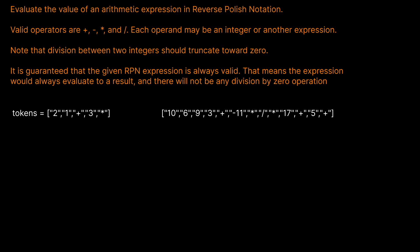If you don't know what reverse Polish notation is, basically instead of the operation coming between two numbers like we typically expect, it comes after them. So if we look at the tokens 2, 1, plus, 3, multiplication — we do 2 and 1, then the next operation is plus, so 2 plus 1 equals 3. Then we have a 3, and the next operation is multiplication, so we multiply the result of 2 plus 1 times 3, which is 3 times 3. Our final answer is 9.